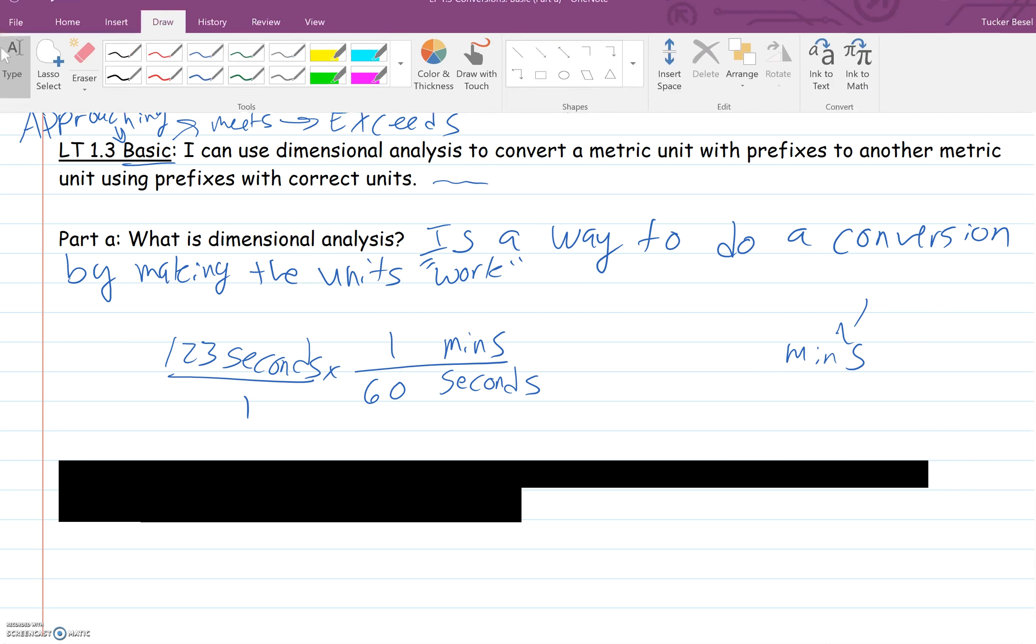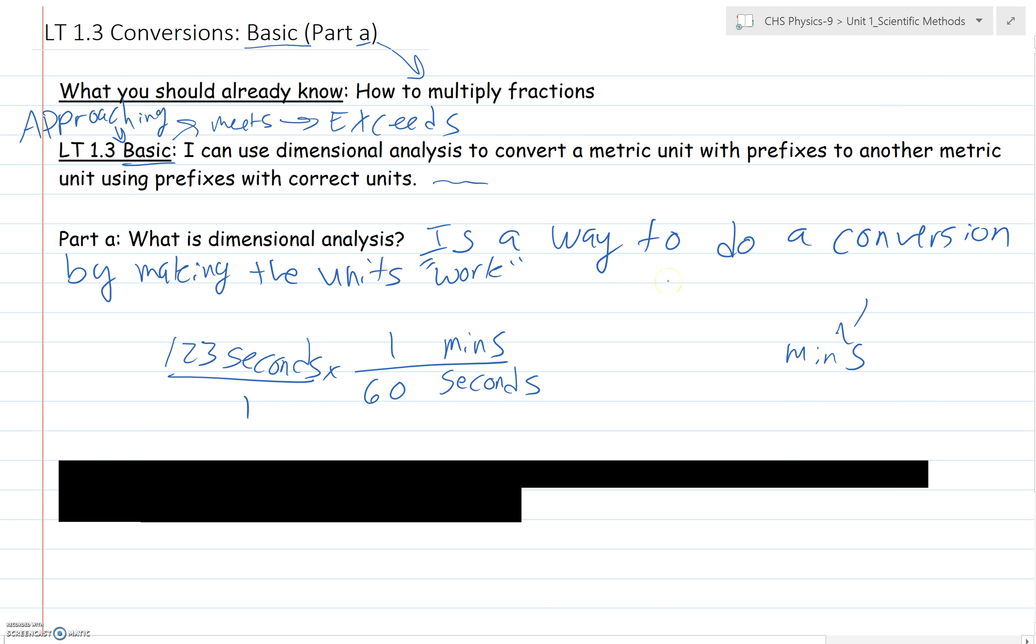We all know that there are 60 seconds in one minute. If we follow along with our fraction rules, you multiply straight across, and then in the end you divide the top by the bottom. So 123 times 1 is 123. 1 times 60 is still 60. So 123 divided by 60 equals 2.05. I've got seconds on the top and seconds on the bottom, so I can cross those two out and I'm left with minutes.